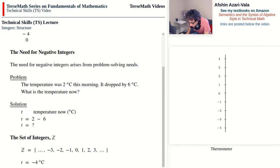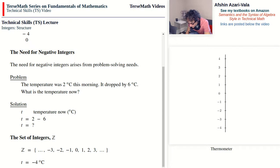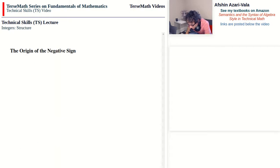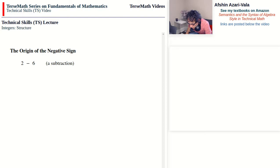So this is the reason we had to introduce negative numbers — to answer questions similar to the problem we just discussed. Now we would like to talk about the origin of the negative sign and also the origin of the positive sign. To explain how the negative sign comes about, let's start with the subtraction 2 minus 6.